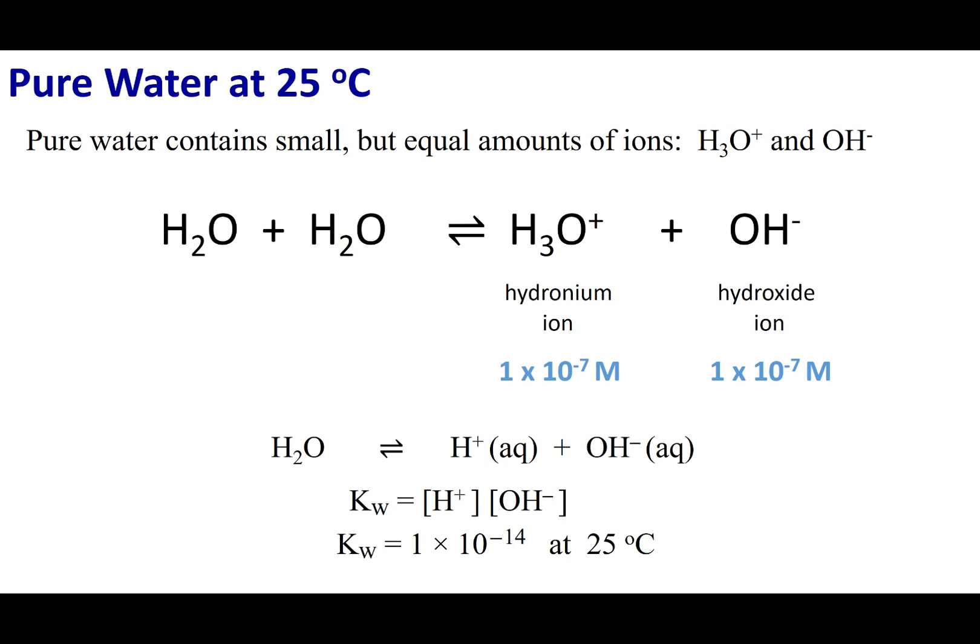Now this is a well noted reaction. This is the auto ionization of water or sometimes referred to as the dissociation of water. If I were to measure this auto ionization at 25 degrees, I can measure the hydronium ion concentration and the hydroxide concentration. Each one of these would be 1 times 10 to the negative 7.